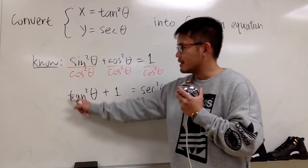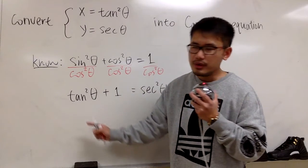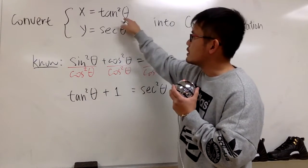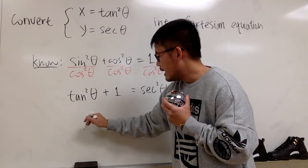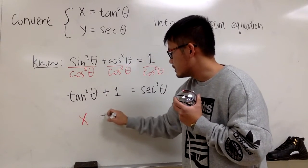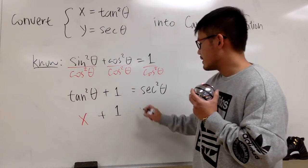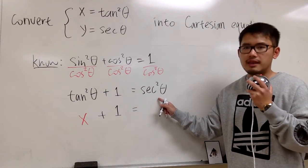We know this is the identity, and we know this right here is what x is. So we can put this down for x. We have x plus 1, it's just a 1, equals to secant squared theta.